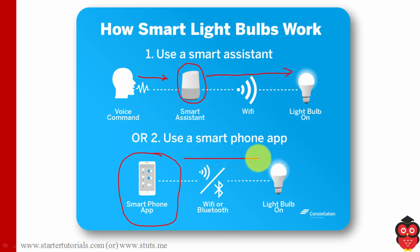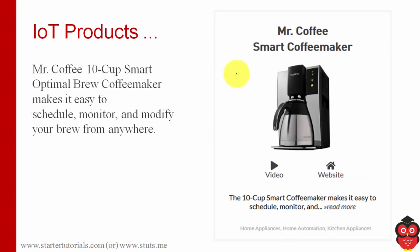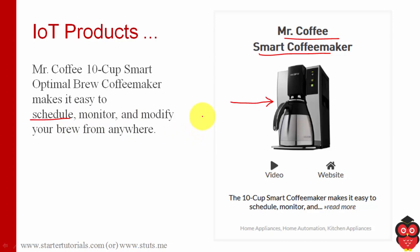Those commands go through Wi-Fi or Bluetooth to the appropriate device. The next IoT product is Nest Cam indoor camera, which can be used for surveillance. You can install this camera in your home and, sitting at the office or some other place, see what is happening inside your home. Another product is the smart coffee maker manufactured by Moccamaster. You can create a schedule — for example, every day at 8 AM make coffee — and adjust the amount of coffee powder or milk.